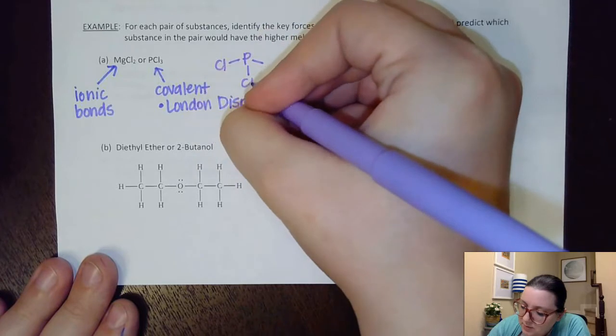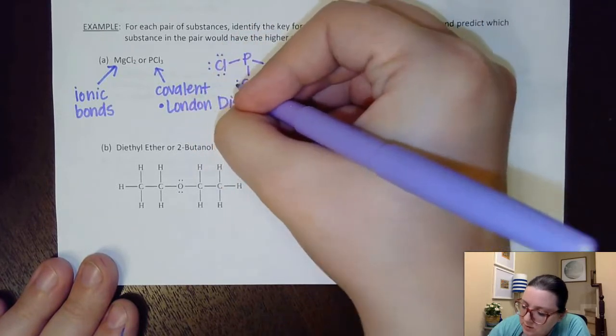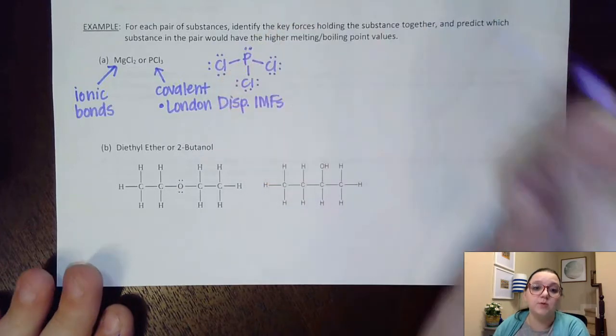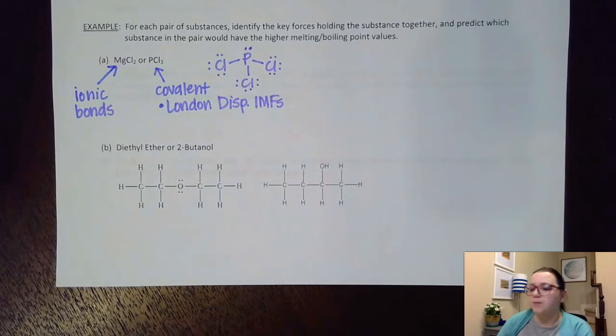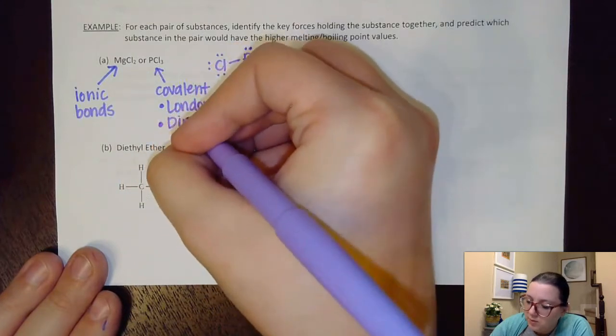PCl3 ends up being trigonal pyramidal, looks like this, with an unshared electron pair at the top. So that's what throws it into that trigonal pyramidal shape. And I can see that that would be polar, so that means I would for sure also have the dipole-dipole IMFs.